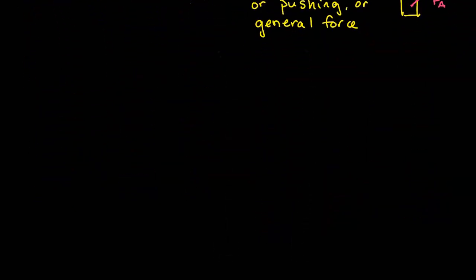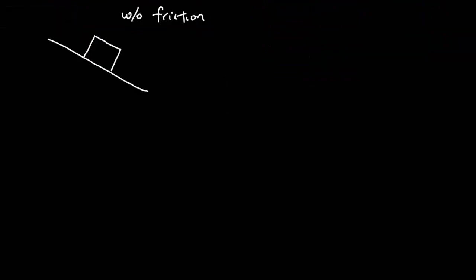Now let's work through some examples. Here we have an object on an incline without friction. I'm going to draw Fg first — gravity force — since all objects will have gravity force acting on them. Then since it's on a surface there's also going to be Fn. Because it said there's no friction, I don't need to add any friction force.